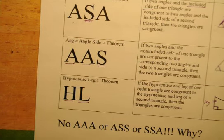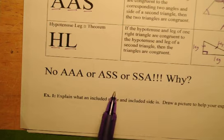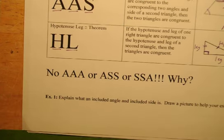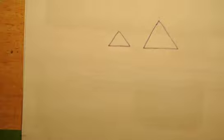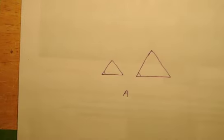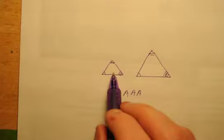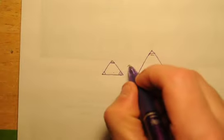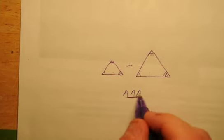You might be wondering: why can't you use AAA? Well, it would be very possible for two triangles to have one, two, or even three angles the same and yet not be congruent. They'd be similar but not congruent — congruent means same size and same shape. So Angle-Angle-Angle does not work for proving congruence.